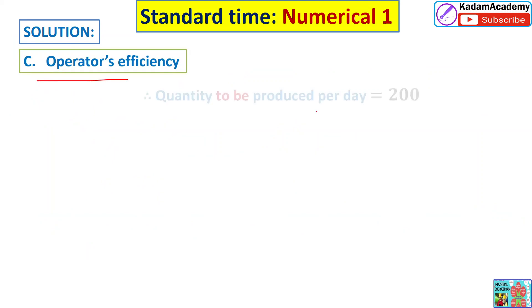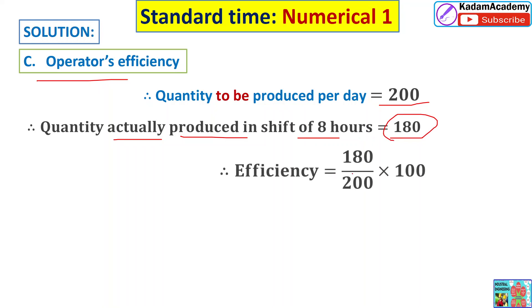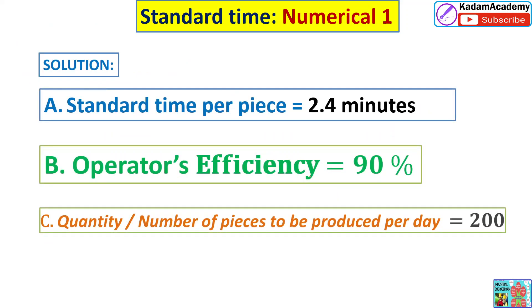For part C, we find operator efficiency. Quantity to be produced per day is 200 pieces. But the worker actually produced 180 pieces in the shift of 8 hours. Operator efficiency = 180 upon 200 into 100 = 90 percent. So the operator's efficiency is 90 percent.